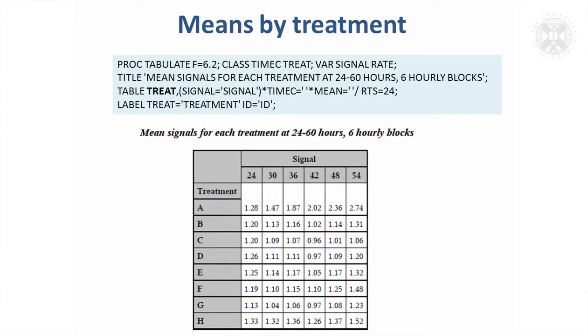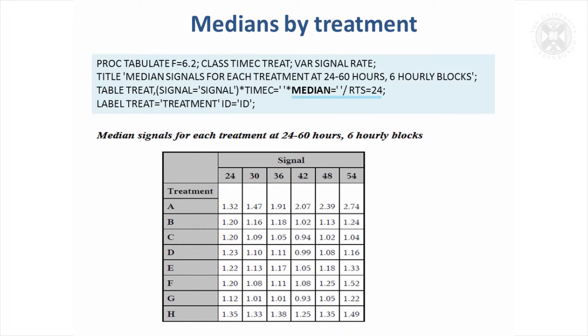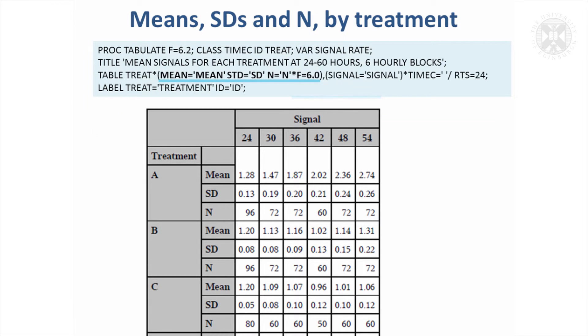That's just for the means for the signal effect, the signal variable now. We could alternatively take the medians by instead of using mean, using median there and we'd change the title statement appropriately. We might want to not only get the means, but get either the standard deviation or the standard error to go with that, so we can request more.